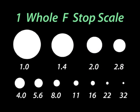A traditional aperture scale where every stop allows half as much light as the previous is as follows: 1.0, 1.4, 2.0, 2.8, 4.0, 5.6, 8.0, 11, 16, 22, and 32.